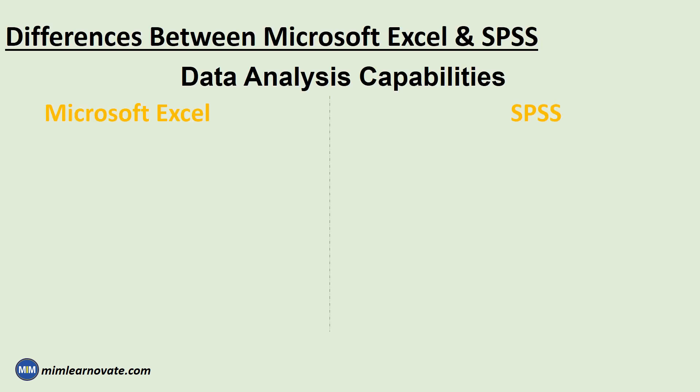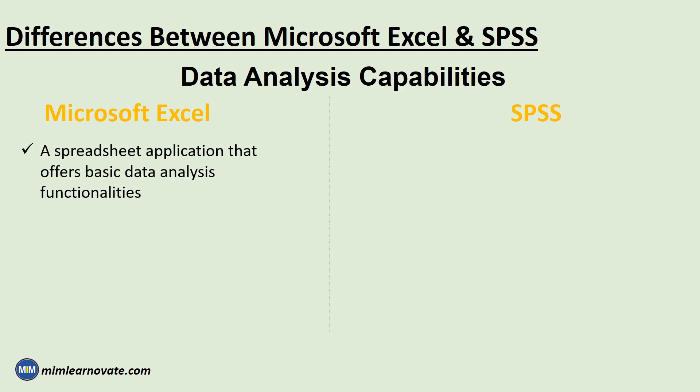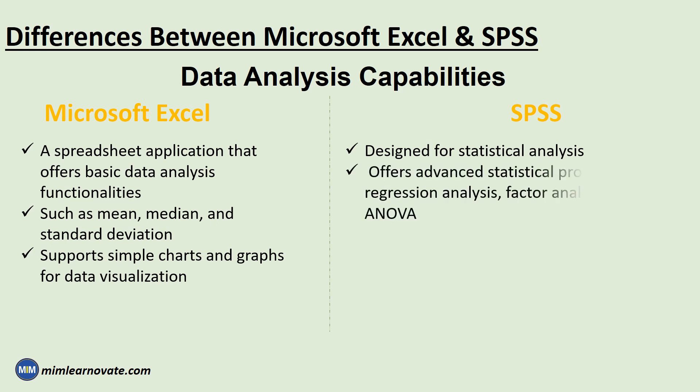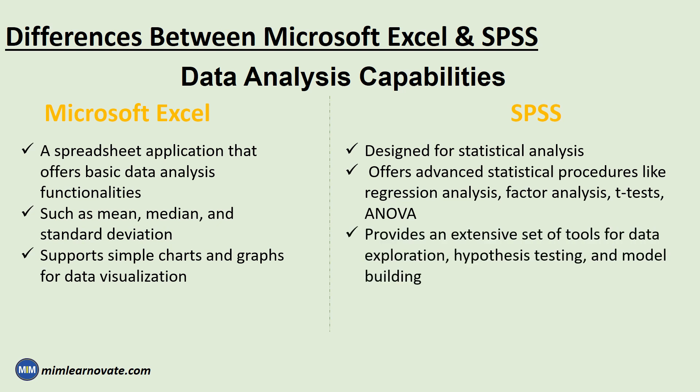Difference between Microsoft Excel and SPSS — Data Analysis Capabilities. Excel is a spreadsheet application that offers basic data analysis functionalities. It provides important statistical functions such as mean, median, and standard deviation, and supports simple charts and graphs for data visualization. SPSS is specifically designed for statistical analysis and offers a wide range of advanced statistical procedures including regression analysis, factor analysis, t-test, ANOVA, and more. SPSS provides an extensive set of tools for data exploration, hypothesis testing, and model building.